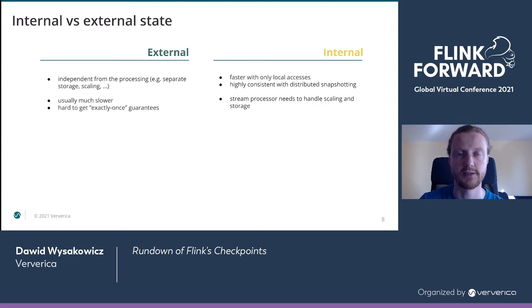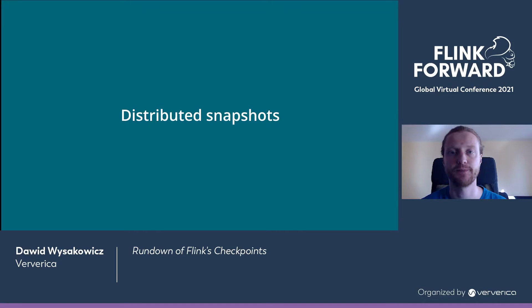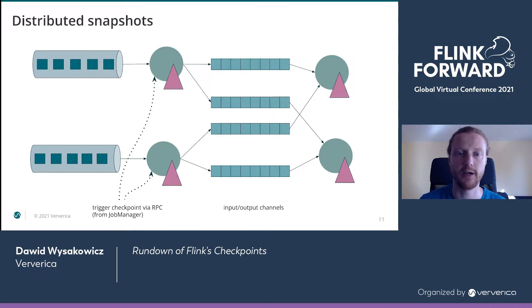With internal state, all accesses are much faster because we just access state locally. It's also much easier to implement highly consistent snapshots — we can create a distributed, aligned snapshot of the entire processing state. The downside is that the stream processor needs to handle more things like scaling and storage, but as a user you don't necessarily need to deal with this — it's handled by Flink itself. Flink uses the notion of internal state, implementing an algorithm of distributed snapshots similar to the Chandy-Lamport algorithm.